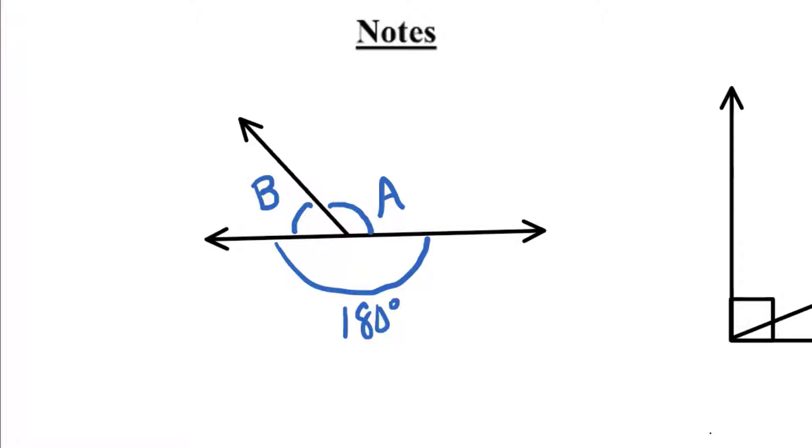Anytime you have a straight angle like that, that's being cut into two pieces. What we know is that angle A plus angle B has to add up to 180 degrees. So you'll be given diagrams that are marked in various ways, and you're going to have to use this relationship.